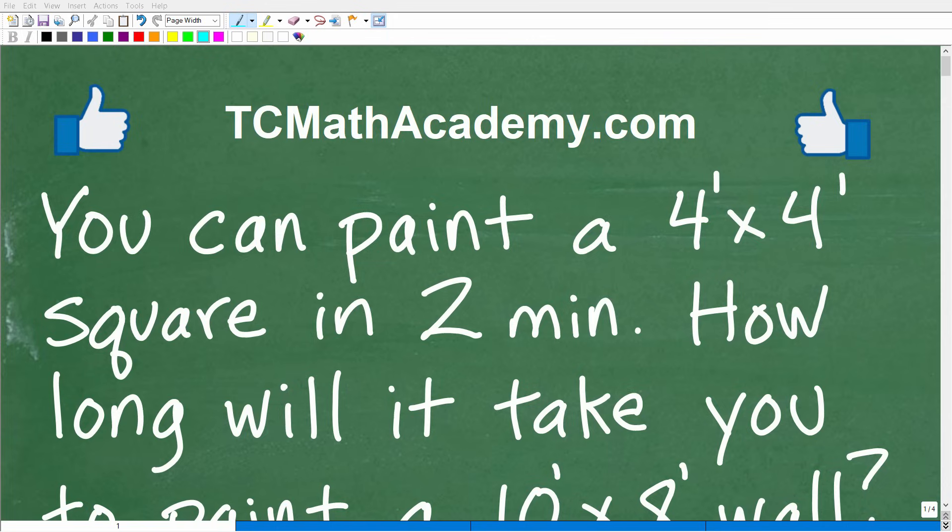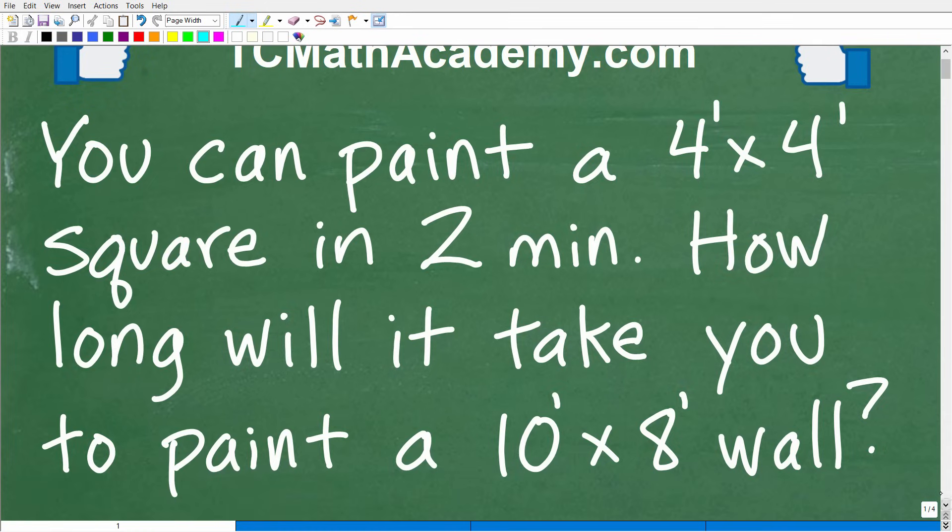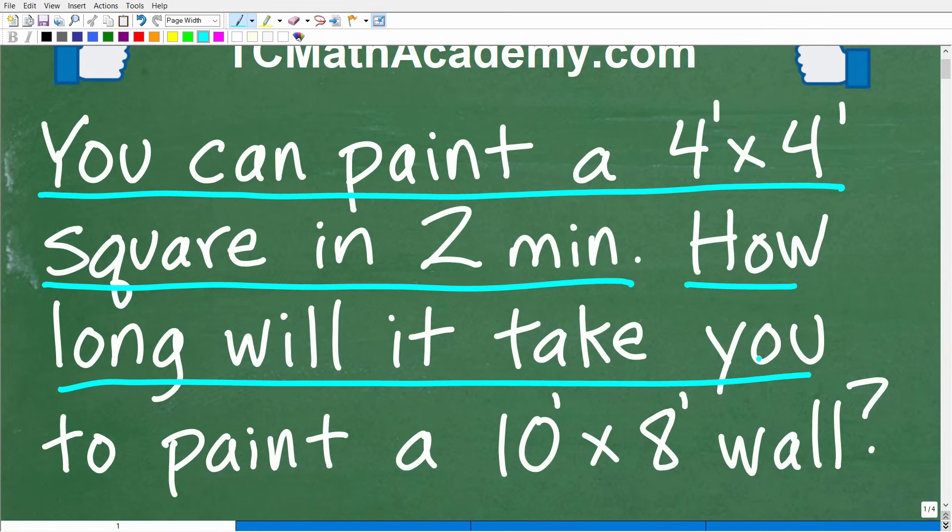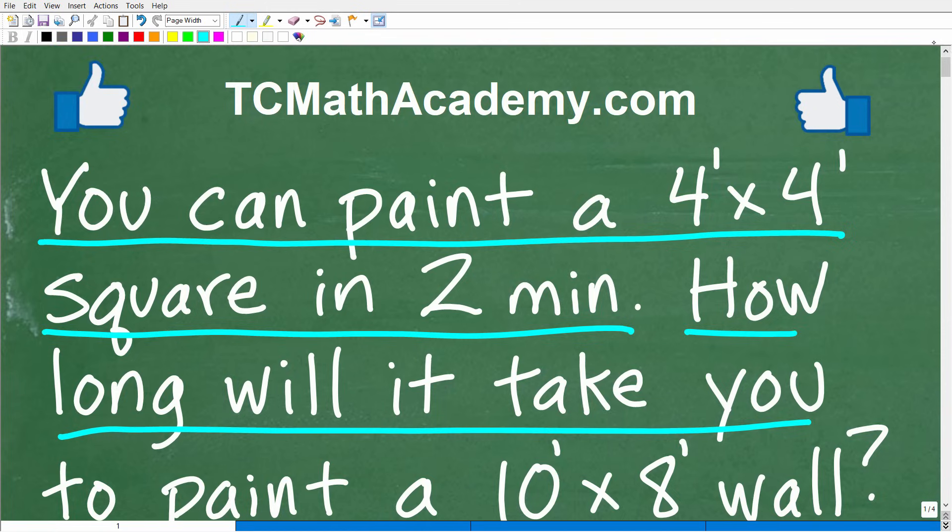Okay, so can you solve this basic math word problem? I actually think you can. Matter of fact, let me go ahead and read the problem here. You can paint a 4 foot by 4 foot square in 2 minutes. How long will it take you to paint a 10 foot by 8 foot wall? Now if you can figure this out, go ahead and put your answer into the comment section. I'll show you the right answer in just one second.